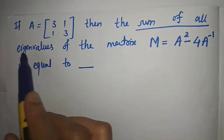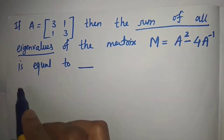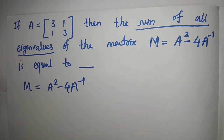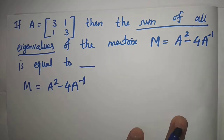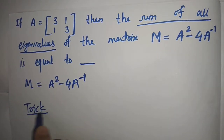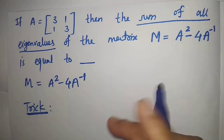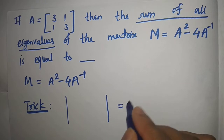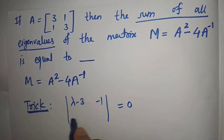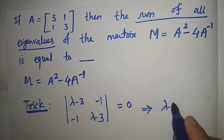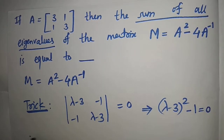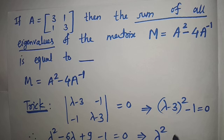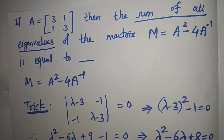It is difficult to directly compute A² and A⁻¹ and find eigenvalues of M, so we use the same trick: every matrix satisfies its characteristic polynomial. We compute det(λI - A) = 0, giving us (λ-3)² - 1 = 0, which yields λ² - 6λ + 8 = 0.